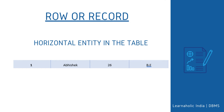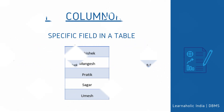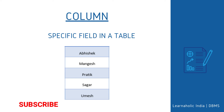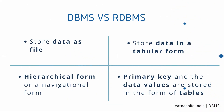Now let's see what is a row or record. A row of a table is also called a record. It contains the specific information of each individual entry in the table. It is a horizontal entity in the table. For example, the above table contains 5 records. A column is a vertical entity in the table which contains all information associated with a specific field in a table. For example, 'name' is a column in the above table which contains all information about the student's name. The null value of a table specifies that the field has been left blank during record creation. It is totally different from a value filled with 0 or a field that contains space.